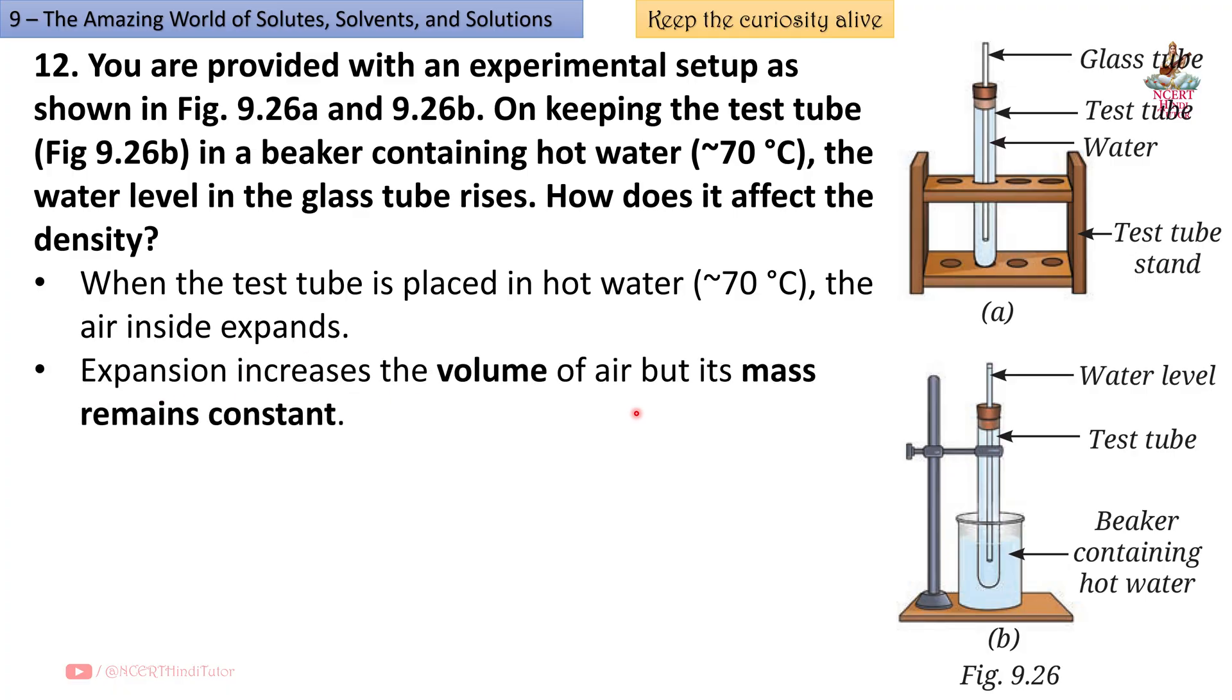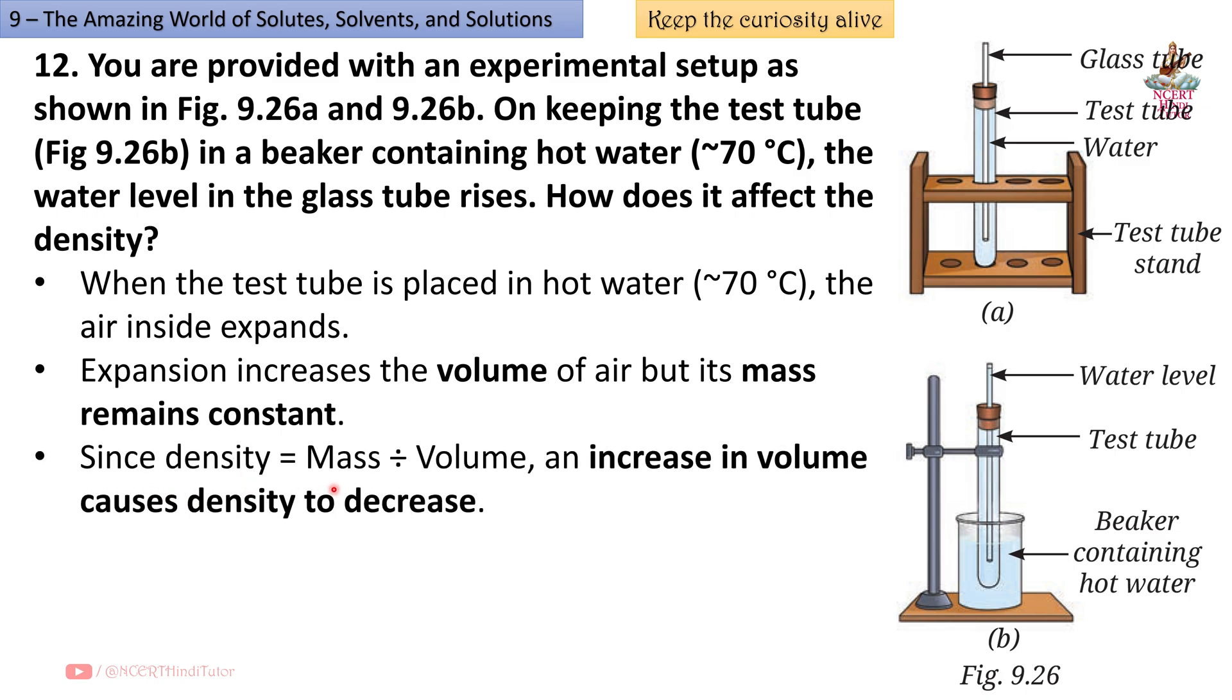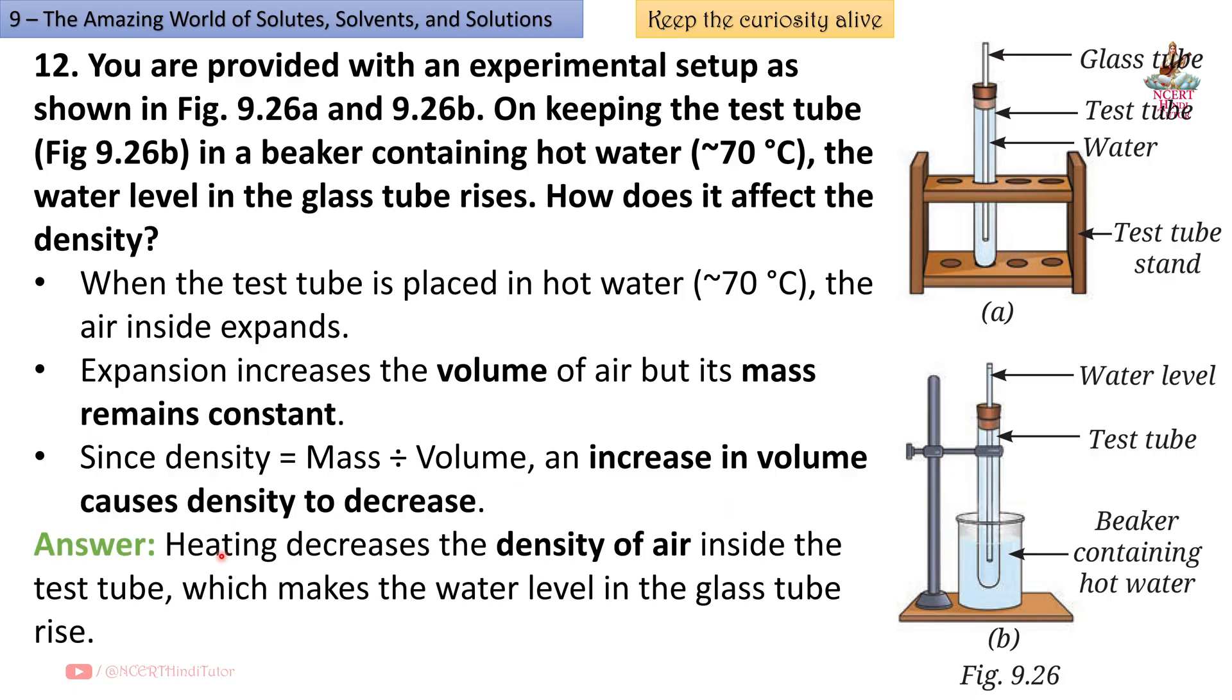When the test tube is placed in hot water approximately 70 degree Celsius, the air inside expands. Expansion increases the volume of air but its mass remains constant. Since density equals mass divided by volume, an increase in volume causes density to decrease. Heating decreases the density of air inside the test tube, which makes the water level in the glass tube rise.